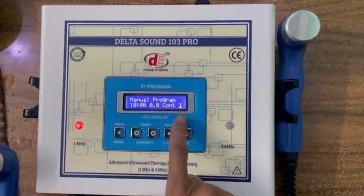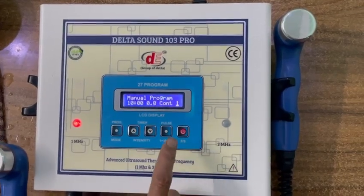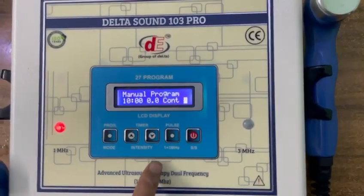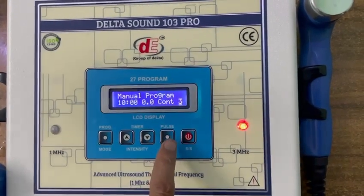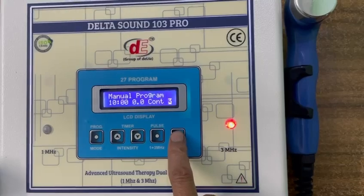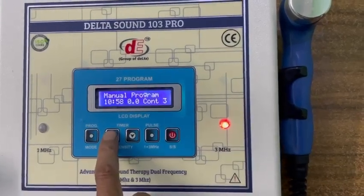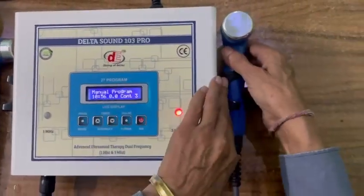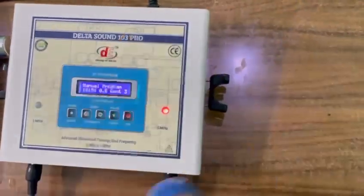Now you can change the cursor blinking on 1. Now you can use pulse 1 and 3 MHz button one time. Now it is on 3 MHz. Now simply start and increase the intensity. This time you have to use 3 MHz.